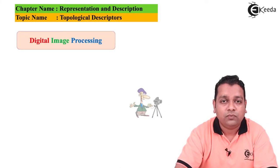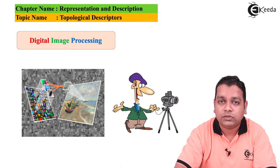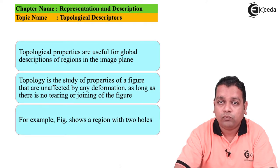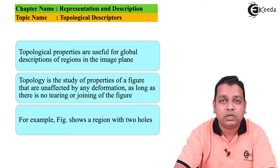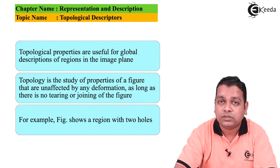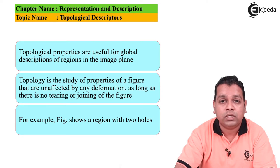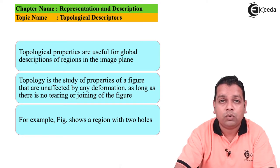We start with topological descriptors. Topological properties are useful for the purpose of global descriptions of the regions in the image plane after the original image is segmented. Topology is the study of properties of a figure that are unaffected by any deformation, as long as there is no tearing or joining of the figure.